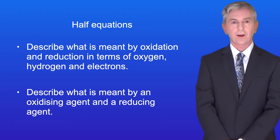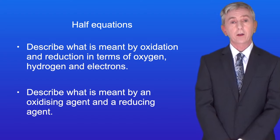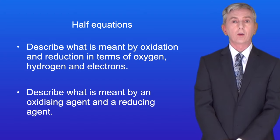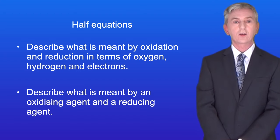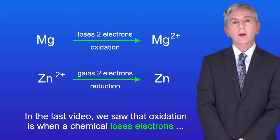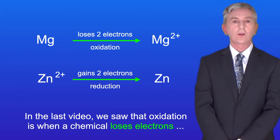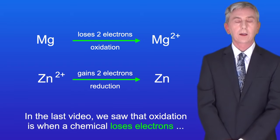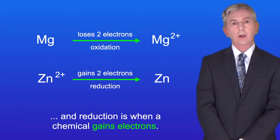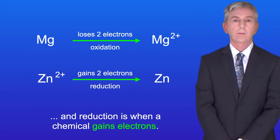Hi and welcome back to Free Science Lessons. This is the second part of a two-part video looking at oxidation and reduction. In the last video we saw that oxidation is when a chemical loses electrons, and reduction is when a chemical gains electrons.